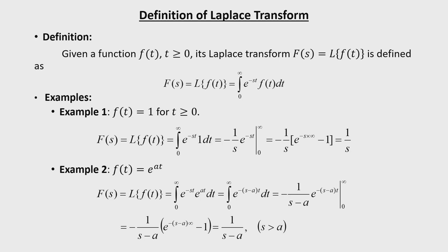The Laplace transform is defined as the integral of e^(−st) · f(t) dt, where f(t) is a time function. It is integrated from zero to infinity because f(t) is defined for t greater than zero. This integral is known as the Laplace transform of f(t). Since it is integrated with respect to variable t, the resulting function will be in terms of variable s.